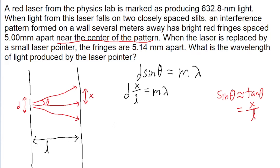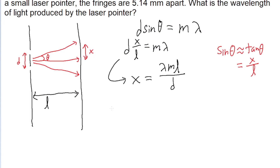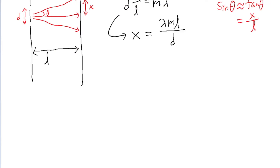This is where things might start getting a little tricky from a process perspective. We are given the x values for both laser pointers. We're told that x is 5 millimeters apart near the center of the pattern for one of the lasers, and the fringes are 5.14 millimeters apart for the second laser. So I'll start by algebraically rewriting this equation to solve for x — multiplying both sides by L and dividing both sides by D — and we can see that x equals lambda multiplied by M times L divided by D.